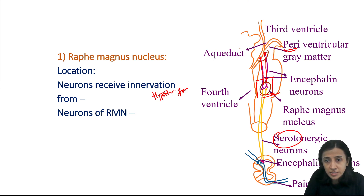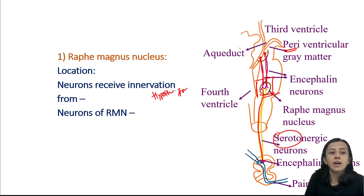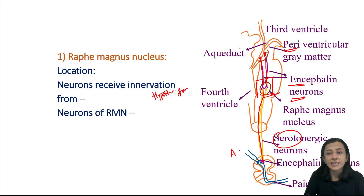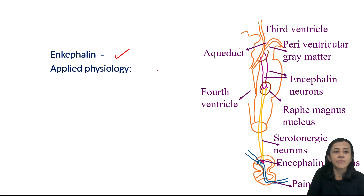Serotonergic neurons descend down and reach the dorsal horn of the spinal cord. There are also enkephalin-secreting neurons. Enkephalin-secreting neurons cause presynaptic and postsynaptic inhibition of A-delta and C fibers — the pain fibers. So enkephalin-secreting neurons from the raphe magnus nucleus play an important role in pain inhibition.